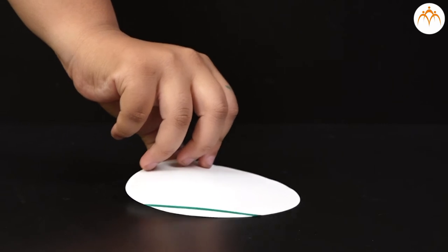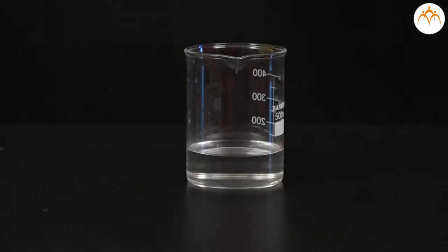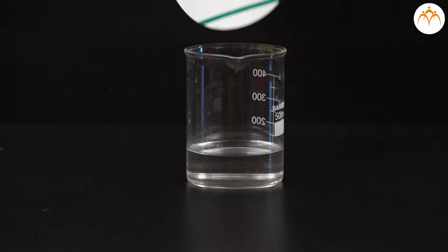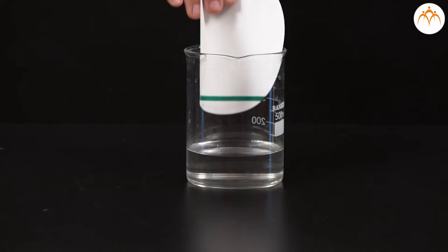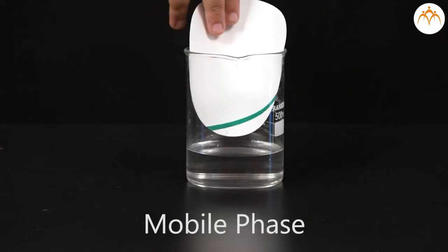Let us spot the green sketch pen at the bottom of the paper. Now, we will lower this paper in a solvent such that the solvent wicks through the paper. Since the solvent moves up during the process, it is the mobile phase.